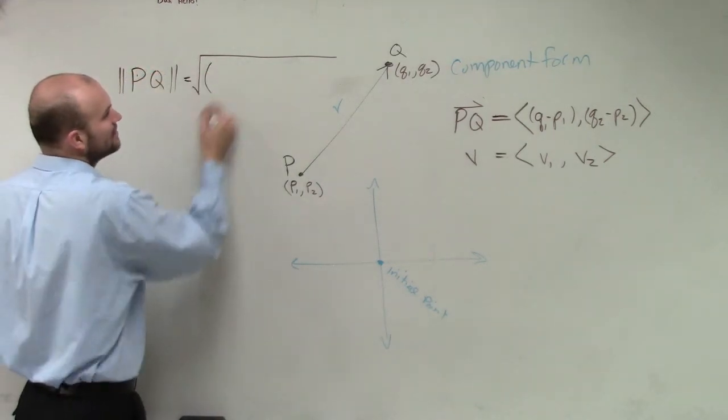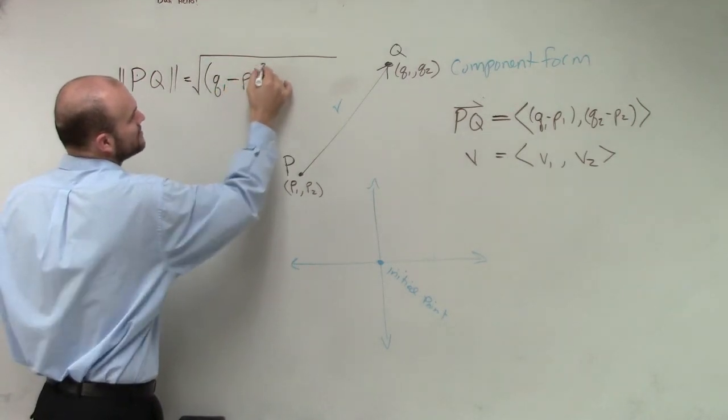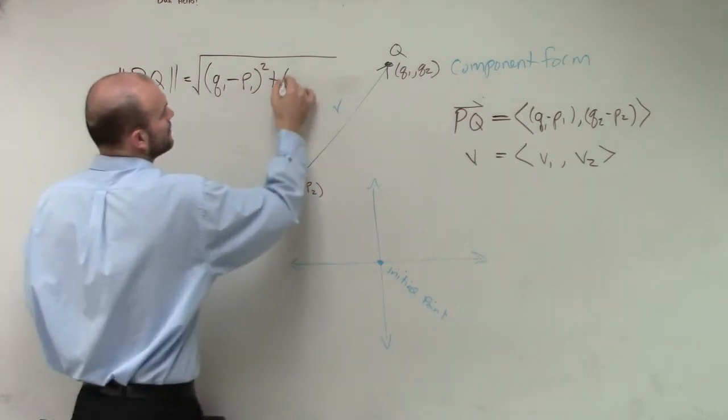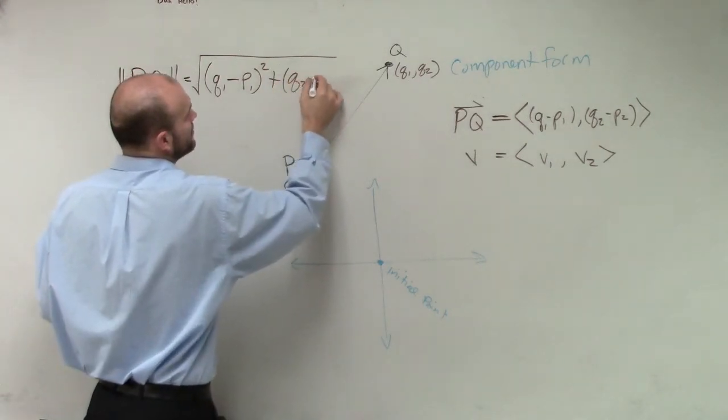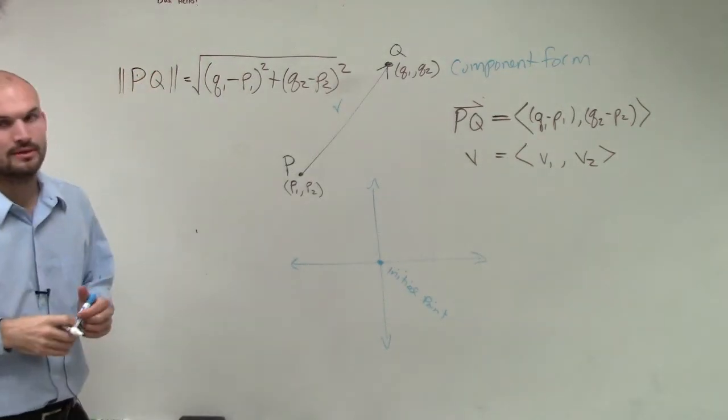The distance formula is q1 minus p1 squared plus q2 minus p2 squared.